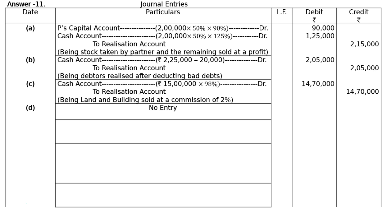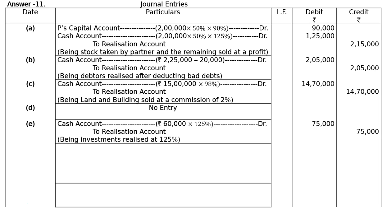Part E: investment with book value Rs.60,000 was realized at 125%. Simple entry — cash account debited to Realization account. The Rs.60,000 worth of investment realized at 125%, representing a profit of 25%, gives Rs.75,000. Cash account debited to Realization account Rs.75,000, being investments realized at 125%.